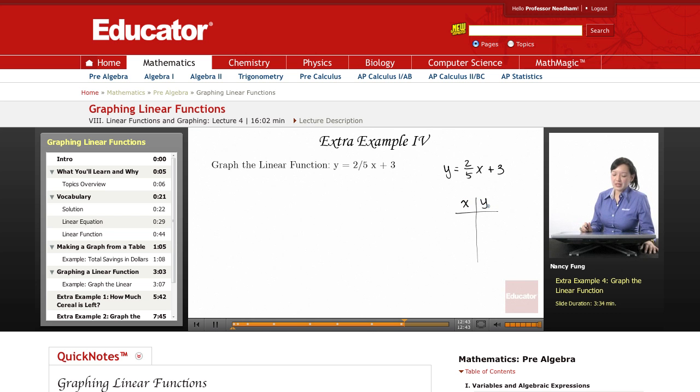Now this is an interesting linear function to look at because it has a fraction of 2 over 5. And when you have a fraction like that, which is sort of small, it might be difficult to find the exact location on a graph with unit squares. So what I would do is choose x values that are multiples of 5.